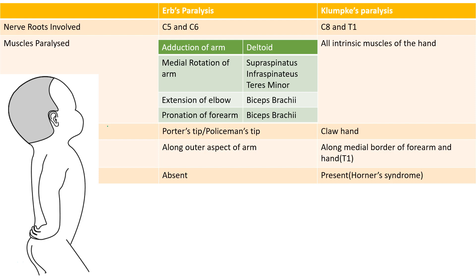It occurs because of paralysis of the deltoid muscle resulting in adduction of arm. Medial rotation of the arm because of involvement of the rotator cuff muscles, supraspinatus, infraspinatus and teres minor. Biceps brachii paralysis causes extension of elbow and pronation of arm.